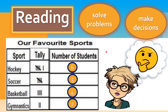Pay attention to this tally graph. I'm going to ask you some questions. You're going to think about your answer, say it to yourself, and I'll tell you if you're correct. What sport do the children in the class like the most? Take a few seconds and think about it. If you said that the children in the class love hockey the best, you are absolutely right. How did you solve that problem? Of all the numbers, six is the greatest or biggest number, so that means the most favorite sport in the class is hockey.